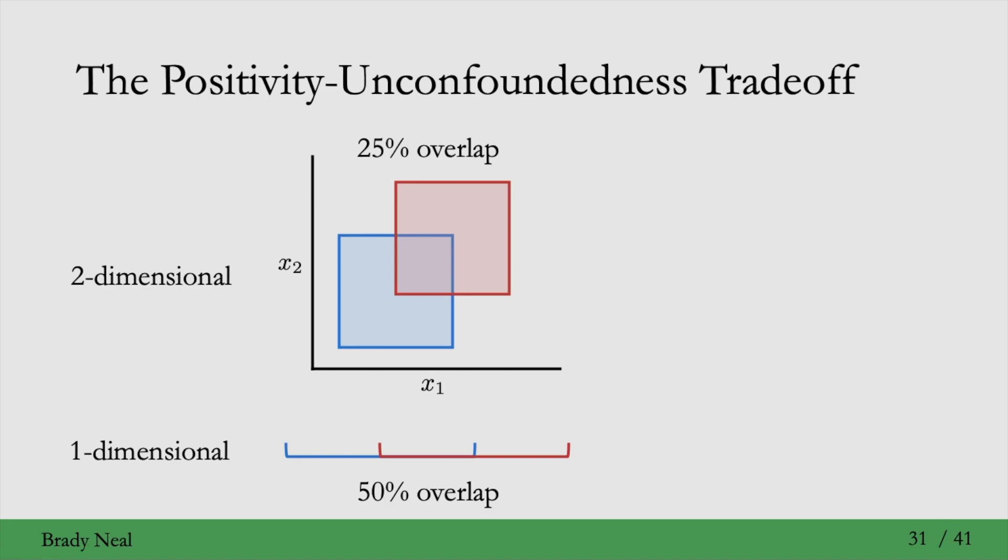This is if we were to condition on two covariates—a vector of length 2. Whereas if the vector was of length 1, then we would have 50% overlap, which is better than 25% overlap. More overlap is better. And then if we go on to higher and higher dimensions, things go down exponentially. This is due to what's called the curse of dimensionality in machine learning. And this trade-off is very important to keep in mind when you're practicing causal inference.